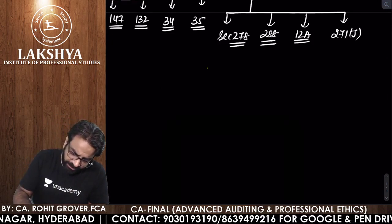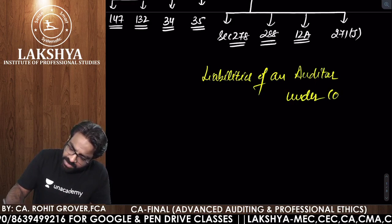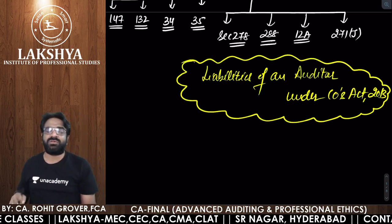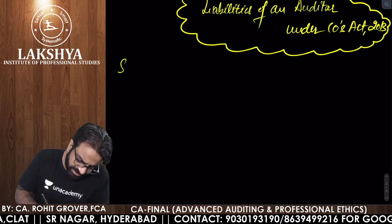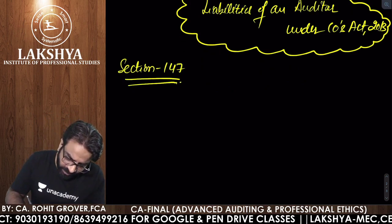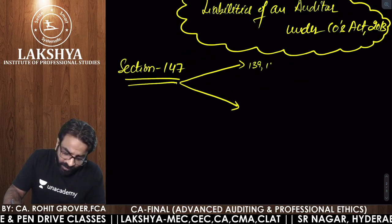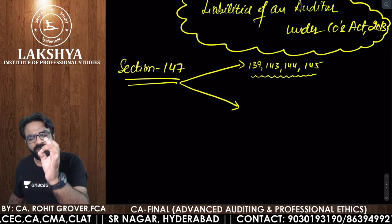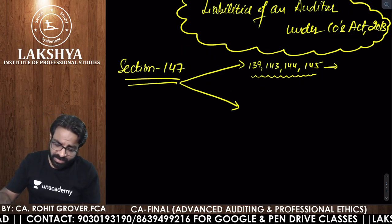Liabilities of an Auditor under Companies Act 2013. The first section we covered was Section 147. Specifically, two types of liabilities are there: if the auditor is violating Section 139, 143, 144, and 145, then the penalty is minimum ₹25,000 and maximum ₹5 lakhs or four times of remuneration received, whichever is lower.